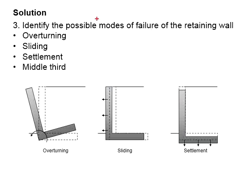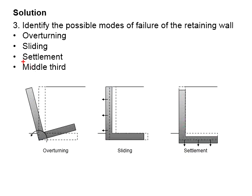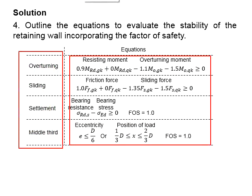The possible mode of failure of retaining wall involve overturning, sliding, settlement, and also middle third, which is related to uplifting of the retaining wall. The equations used to check the stability of the retaining walls are given here.